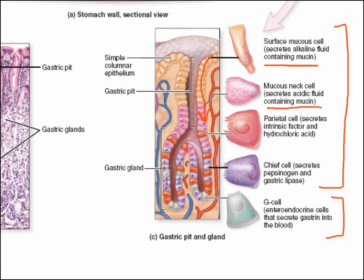The mucosal neck cells secrete much more of an acidic fluid. This acidic secretion of the mucosal neck cells is designed to maintain the acidic conditions that are created by the parietal cells. There are a number of different parietal cells interspersed amongst the mucosal neck cells. These parietal cells secrete a number of different things — first, and most importantly, they secrete hydrochloric acid.